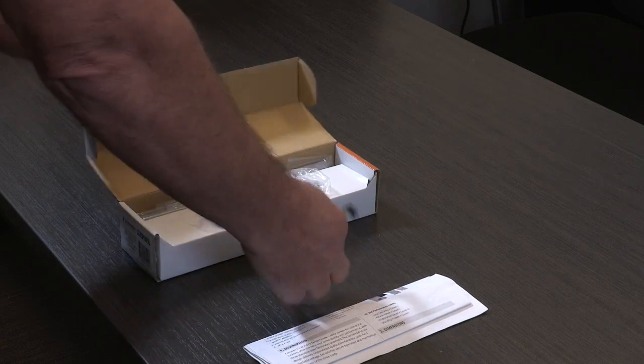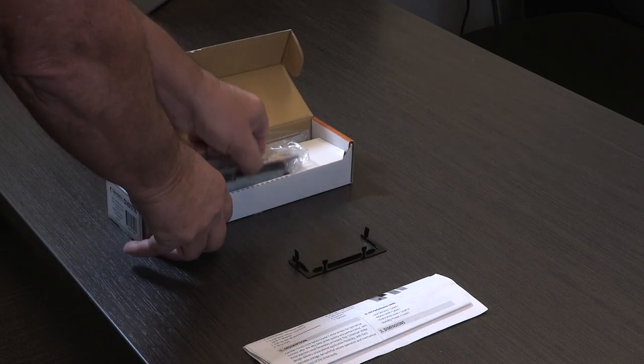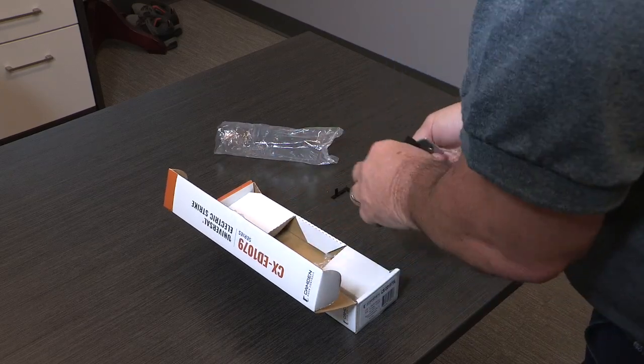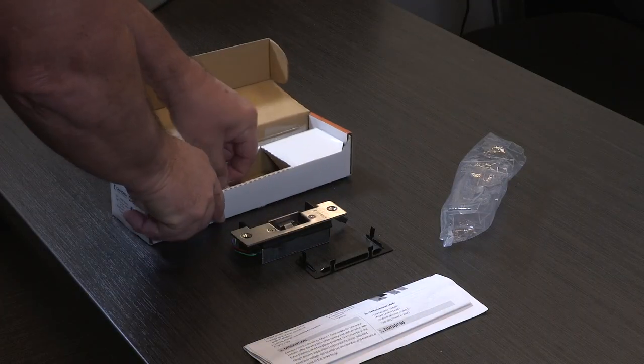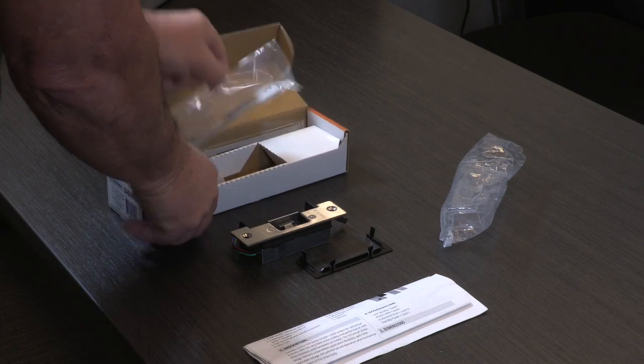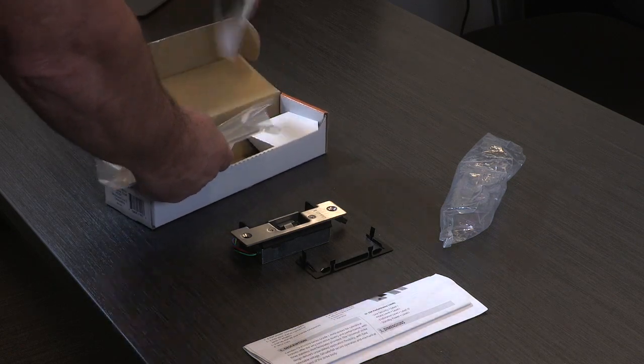Inside the package, you'll find the manual, a trim ring which we'll show you later, and the strike body assembled with an ANSI square faceplate, and two additional faceplates for hollow metal doors and wood doors.